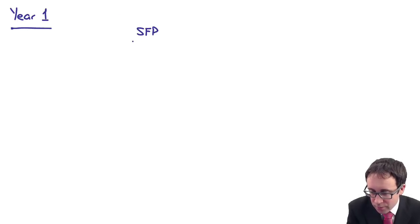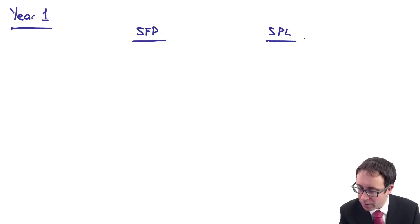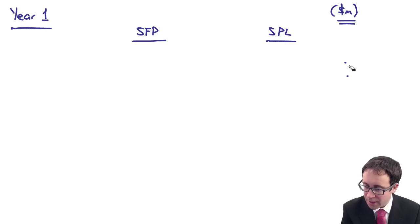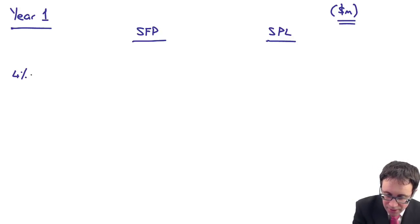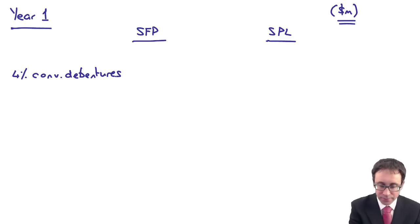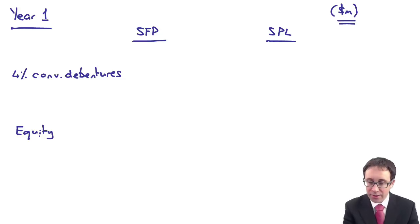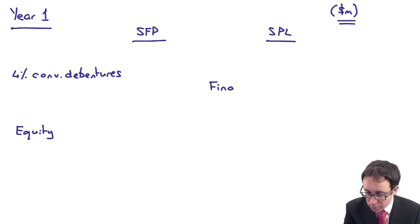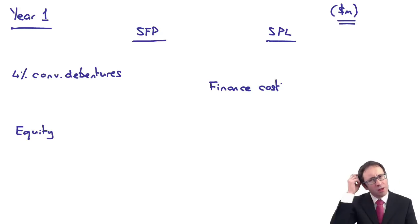On the statement of financial position we will have in liabilities the 4% convertible debentures, and there will also be an equity element. In the statement of profit or loss we will be looking at a finance cost on that outstanding liability based upon the effective rate of interest, which is the 6% market rate. We'll need some workings, so the first working is to calculate the present value of the cash flows.